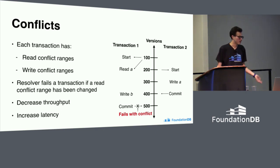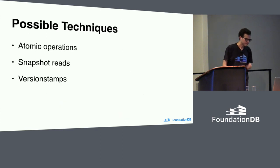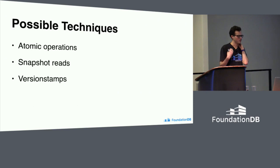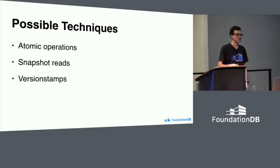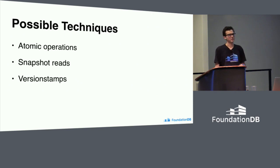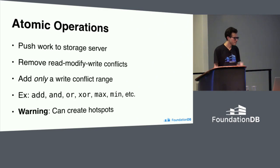So that's pretty bad — you're both decreasing throughput and increasing latency. What can we do about it? I'm going to outline three separate techniques: using atomic operations, using snapshot reads, and using version stamp operations. I'll explain what each of these are, and then go into a motivating use case where you can see them in action.